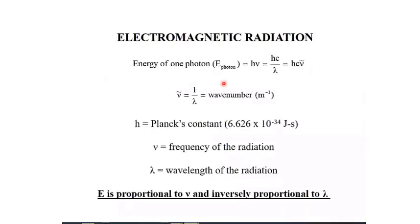To calculate the energy of one photon, there is a formula. You do not have to memorize it — just remember that energy (E) is directly proportional to frequency (ν) and inversely proportional to wavelength.